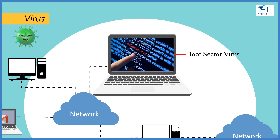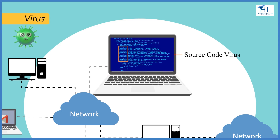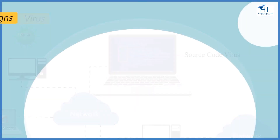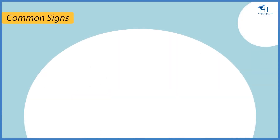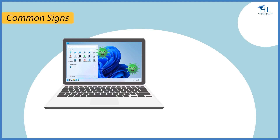A source code virus looks for source code and modifies it to include the virus and to help spread it. A computer virus has an adverse effect on the system, but it can be prevented by discovering common signs of performance loss.